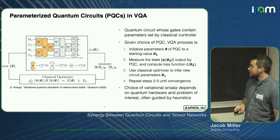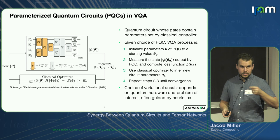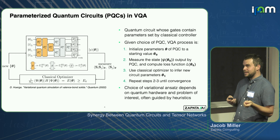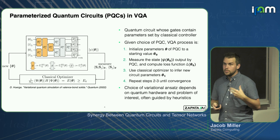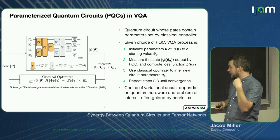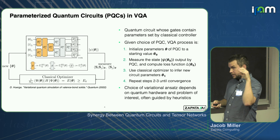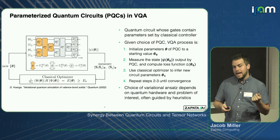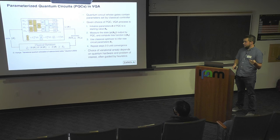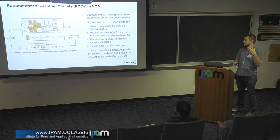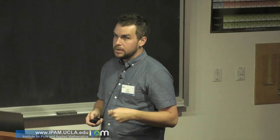The general algorithm for a generic VQA is: you take these parameters, initialize them at some starting value — often using heuristics, but for many people it's just random initialization. You then use those parameters to generate a circuit that you measure, repeat that, collect enough measurement statistics to assess the loss function. Then you use some classical optimizer — classical control logic that looks at previous losses for previous parameter values and makes a smart guess about the next parameter value. You go to that next parameter value, prepare more circuits, measure, and keep repeating until you get reasonable convergence.